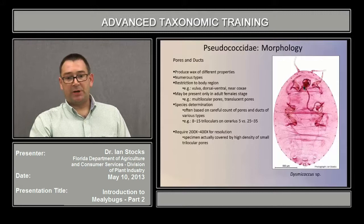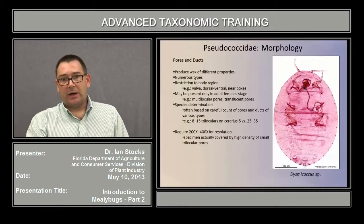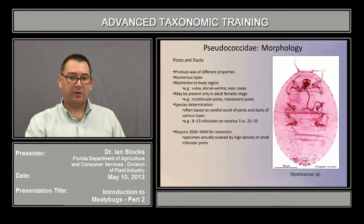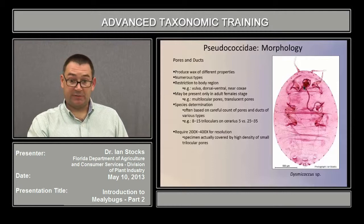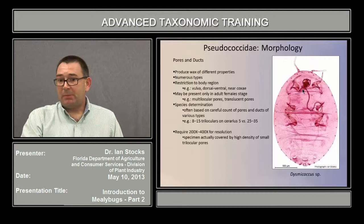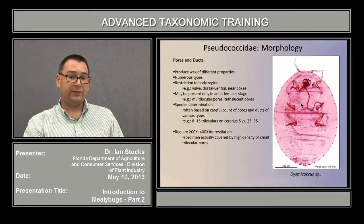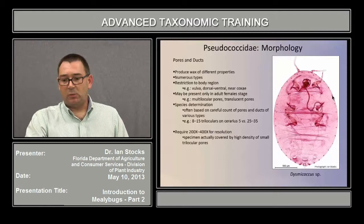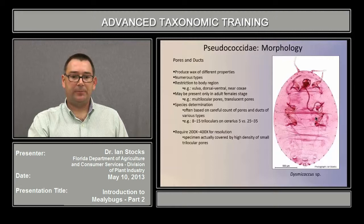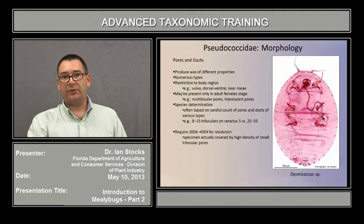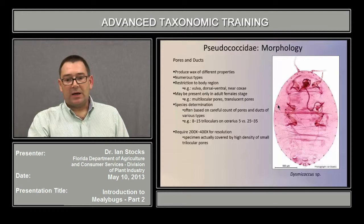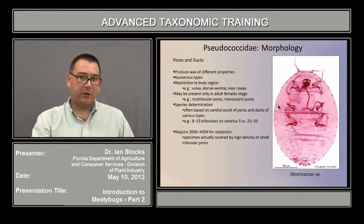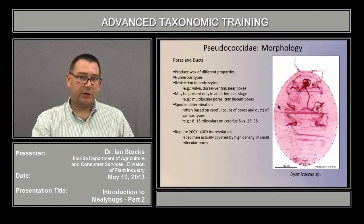Pores and ducts form some of the most important characters for species-level ID. These are responsible for the production of wax of different properties. There are numerous types, and they can be important when restricted to certain parts of the body region — for instance, are they present or absent near the vulva? Are they restricted to the dorsal or ventral surface, or restricted to near the base of the coxa? They may be present exclusively in the adult female stage, as I mentioned for the translucent pores on the legs, but also multilocular pores — especially those around the vulva — are responsible for producing ovisac wax. Species determination is often based on a careful count of pores and ducts, and these usually require 200 to 400x magnification for resolution.